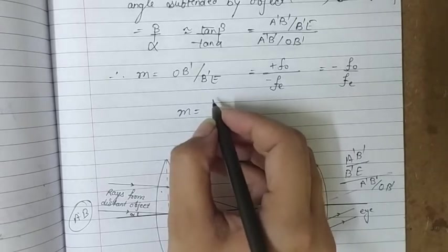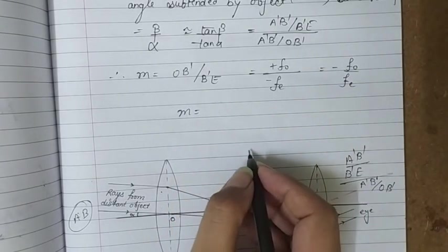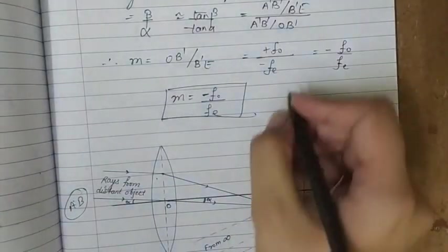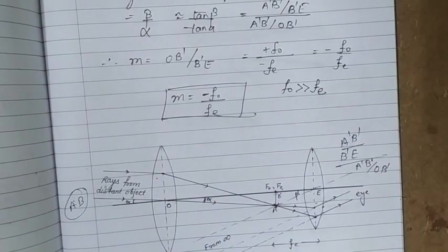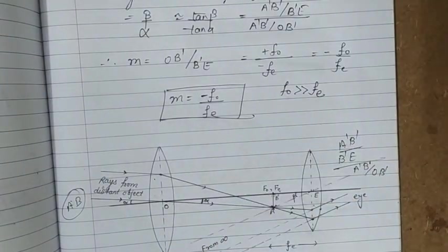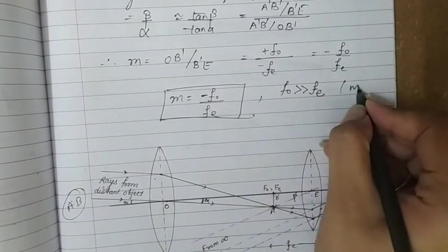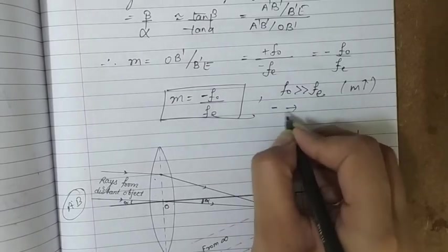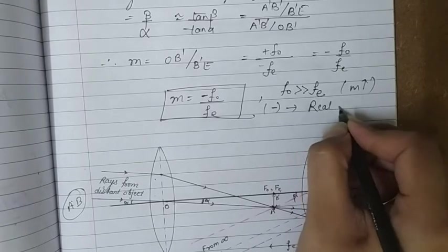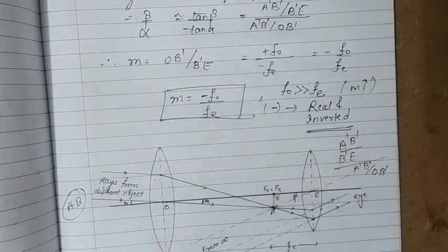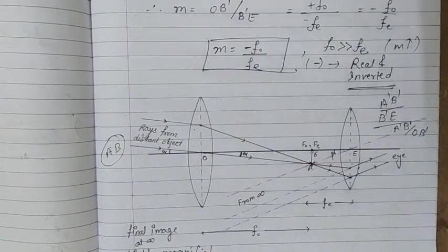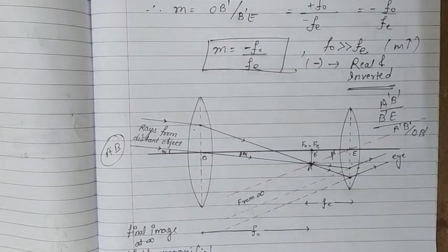So the magnifying power of the telescope in normal adjustment, when the final image forms at infinity, is M = −f₀/fₑ. Again, f₀ must be much greater than fₑ to get a large value of M. The negative sign indicates the image formed is real and inverted. That concludes the video on the astronomical telescope; the next video will be on the reflecting type telescope.